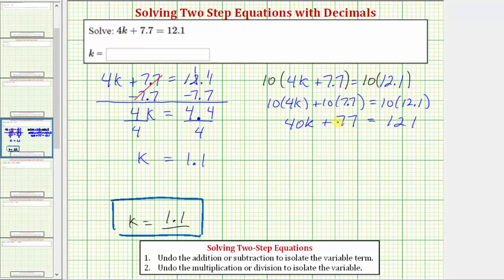Just as before, the first step is to undo the addition. To undo plus 77, we subtract 77 on both sides of the equation. Simplifying, the minus 77 undoes the plus 77, where 77 minus 77 is zero. So we have 40k equals, on the right side, we need to subtract. 11 minus 7 is 4, 11 minus 7 is 4. The difference is 44.